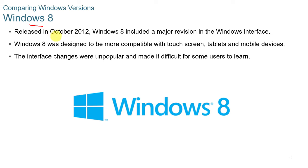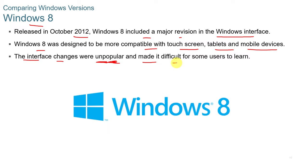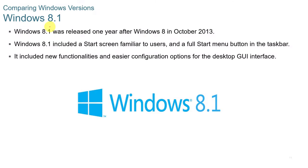Windows 8 was released in October of 2012. It included a major revision to the Windows interface and was designed to be more compatible with touchscreen tablets and mobile devices. The interface changes were unpopular and made it difficult for some users to learn. Because of that, Microsoft released Windows 8.1 one year after Windows 8.